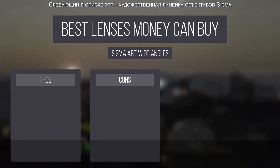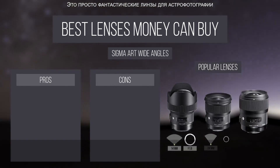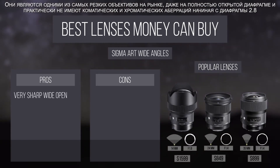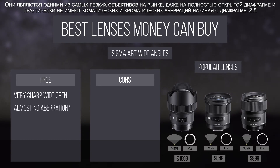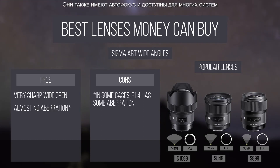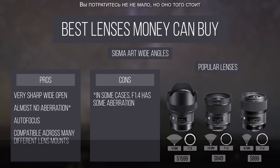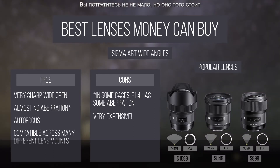Sigma's Art lineup of lenses are fantastic astrophotography lenses. They are some of the sharpest lenses on the market, even wide open, and have virtually no chromatic aberrations once stopped down to f/2.8. They also have autofocus and are available for many lens mounts. But you pay a premium for this quality and these lenses do not come cheap.